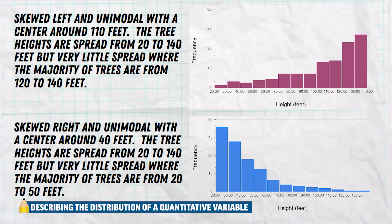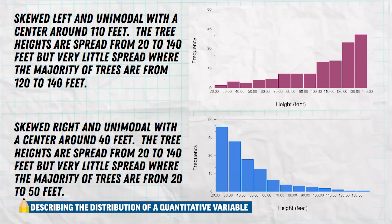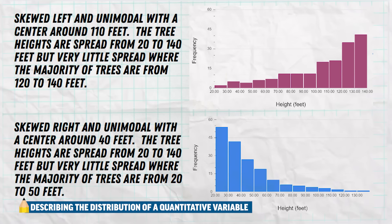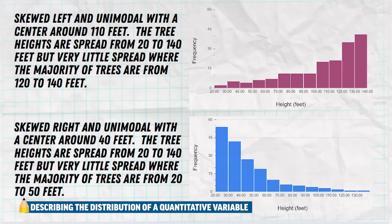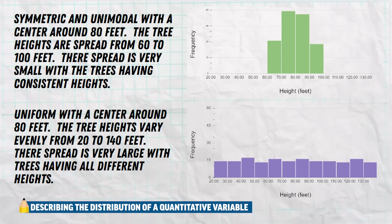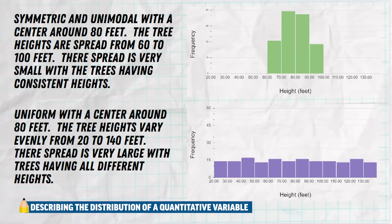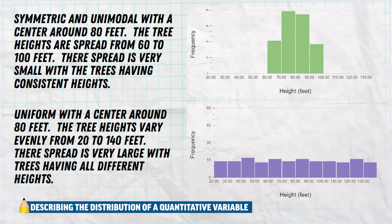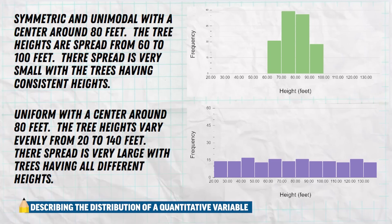Here we see two more samples. The one in purple is clearly skewed to the left, where the majority of the data is on the right, so the center is probably around 120 to 110 feet. The one in blue is skewed to the right, giving a center of maybe 35 to 40 feet. They both have similar spreads, but the majority of the data in purple is at the higher end, where the majority of the data in blue is at the lower end. When your data is very evenly spread, we typically call it uniform.